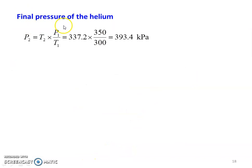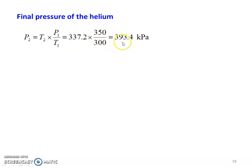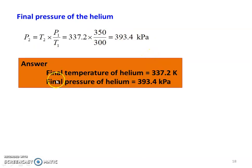Then, finding the final pressure for the helium gas using the constant volume process relation: P2 equal to T2 into P1 divided by T1, equal to 337.2 into 350 divided by 300, equal to 393.4 kilopascal. So, the final temperature is 337.2 Kelvin and the final pressure is P2 equal to 393.4 kilopascal.